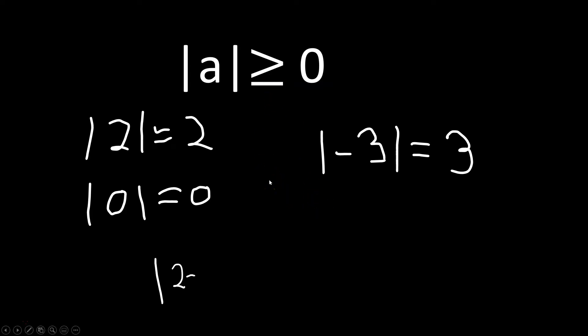If you have an expression like the absolute value of 2 minus 3, you have to work on the expression inside the absolute value bars first. That gives you the absolute value of negative 1, which is just positive 1. In each case, notice the output is always greater than or equal to 0.